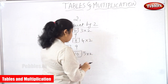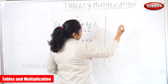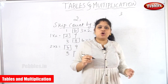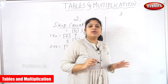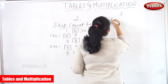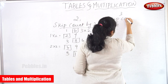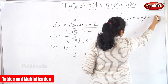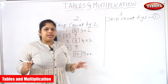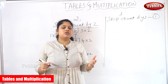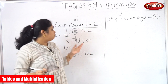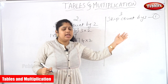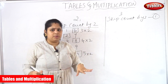Next one is the third table. For the third table, you can also use the skip count by three method, because it's not going to be very difficult. Skipping by three is not going to be very difficult — it will be very easy if you use the skip counting by three method.